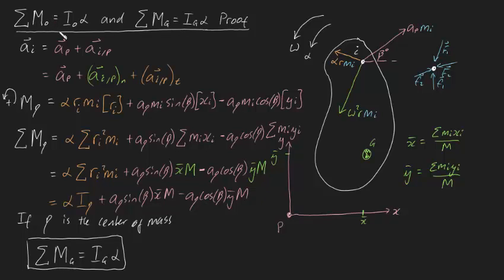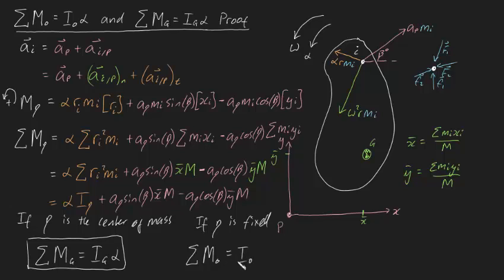Now let's consider the sum of moments about a fixed point O. What happens if point P is fixed — that is, not accelerating? Then AP equals zero, so those extra terms also die out, and we're left with the sum of moments about point O equal to IO·α. We've now proven both formulas: ΣMG = IG·α and ΣMO = IO·α. The general formula applies when P can accelerate freely, and the special cases arise for P equal to G or P equal to a fixed point O. The moment of inertia is now officially tied into engineering dynamics.